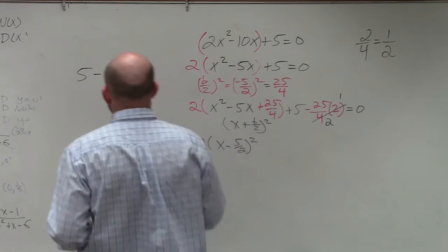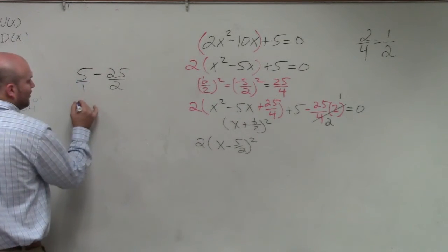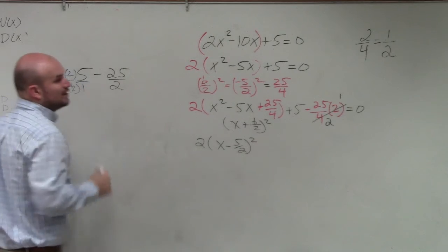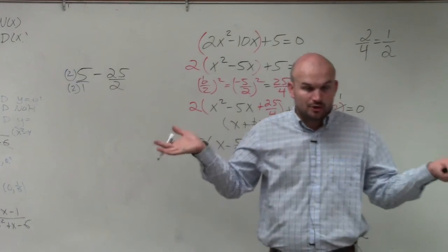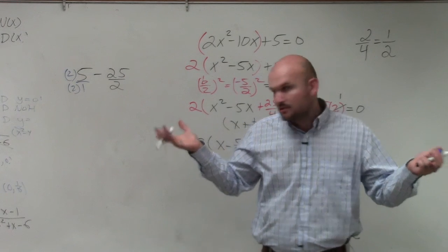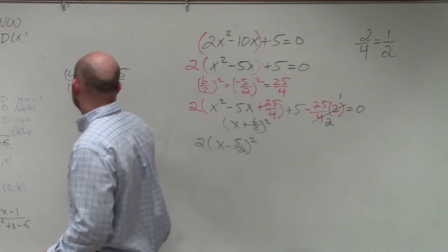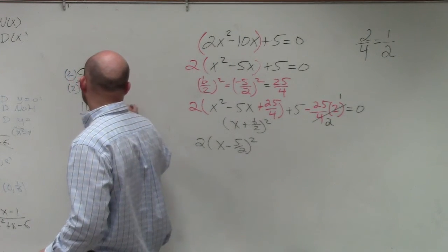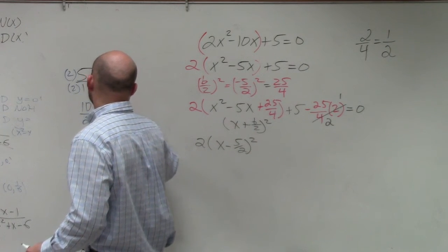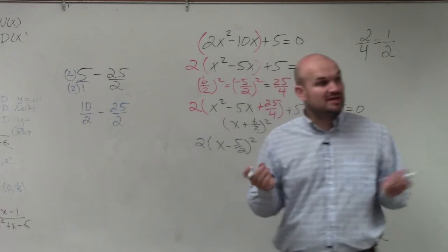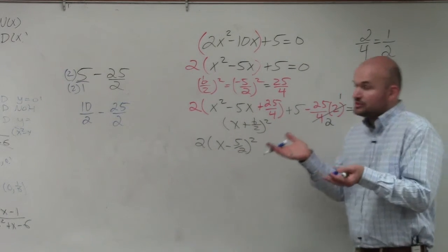So I could easily rewrite this as 5 over 1 and multiply by 2 over 2, because we already agreed that whenever you multiply a fraction the same in the top and the bottom, you produce an equivalent fraction, right? So that's OK. So I have 10 halves minus 25 halves. When you have fractions with the same denominator, you keep the denominator same and just apply the operation to the numerator.